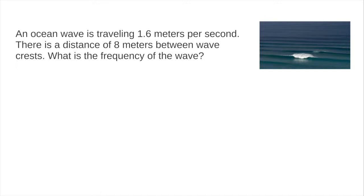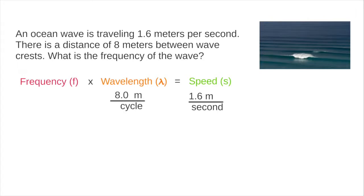Let's try another example. An ocean wave is traveling 1.6 meters per second. There is a distance of 8 meters between wave crests. What is the frequency of the wave? We are given that the speed of the wave is 1.6 meters per second, and the wavelength is 8 meters. So we need to determine what times 8 meters per cycle is 1.6 meters per second. 1.6 divided by 8 gives 0.2 cycles per second.